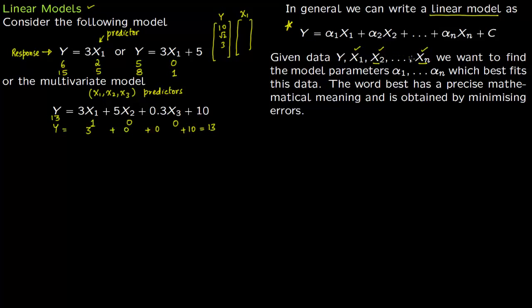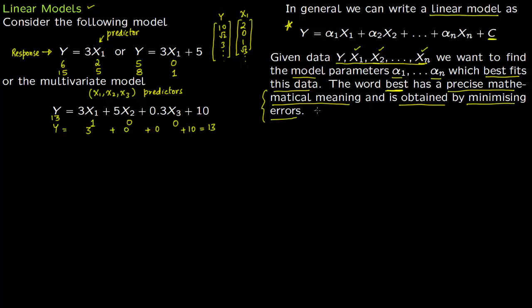Given a vector of values for y and corresponding vectors for x1 (e.g., 2, 0, 1, √3, …), x2, x3, with all vectors having the same length, you want to find the model parameters — α1, α2, …, αn and the constant — that best fit this data. The word 'best' has a precise mathematical meaning: it is obtained by minimizing the error terms, which in calculus leads to first-order conditions.